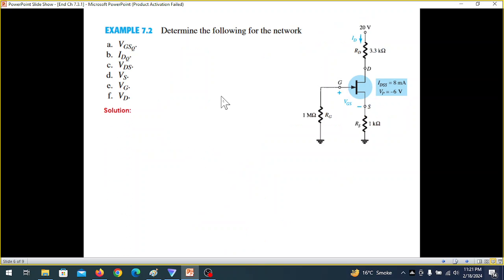So now let's solve example 7.2. In this, we have to determine these following six parameters. We start with the one. We start with VGSQ and IDQ. That is the VG Q point and then IDQ point.